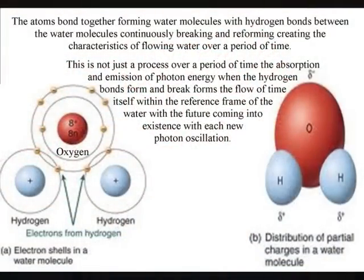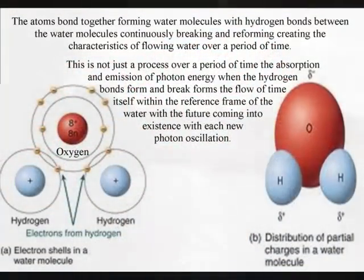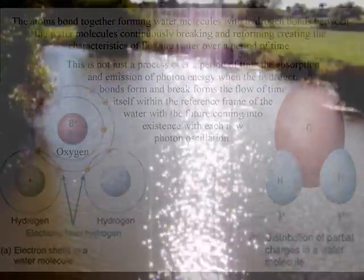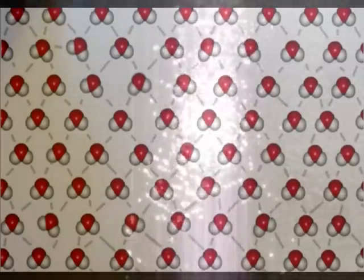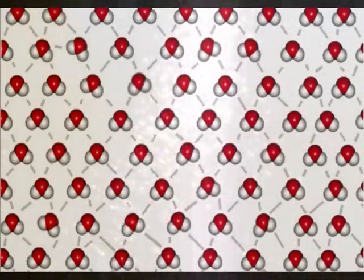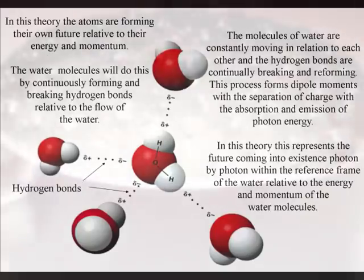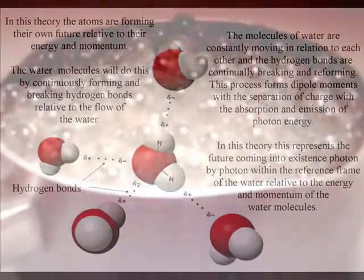Another more simple example of this is water with hydrogen bonds breaking and reforming, releasing photon energy with the future unfolding relative to the flowing water. The interactive nature of this process can be seen with water being able to form the shape of any object that it is poured into.